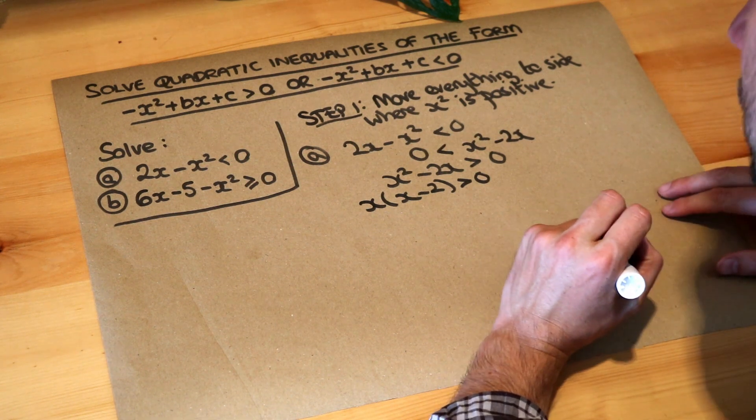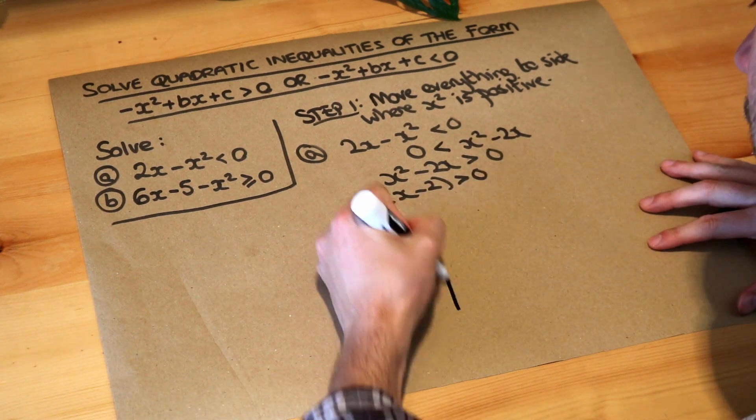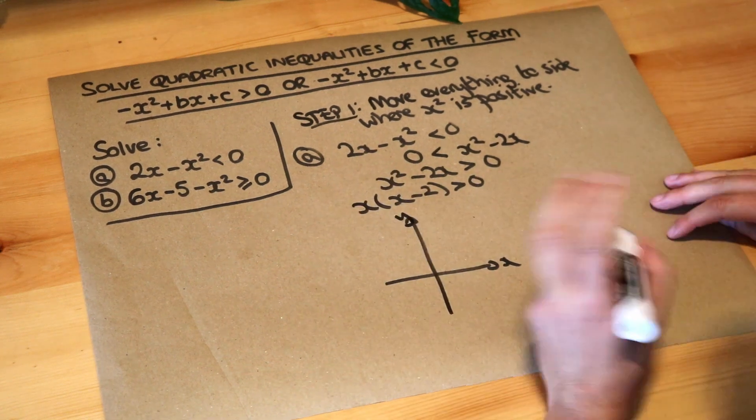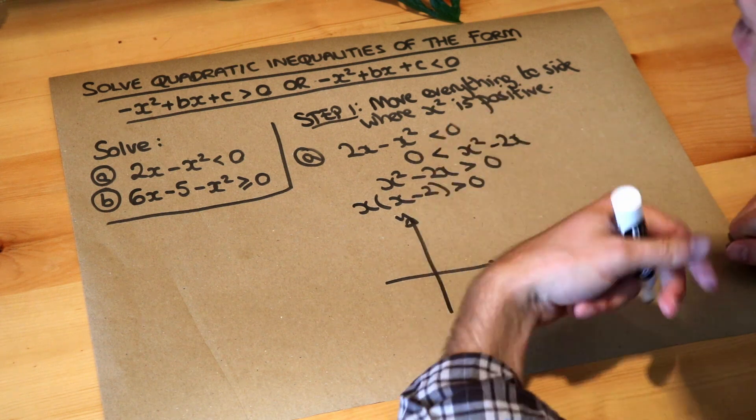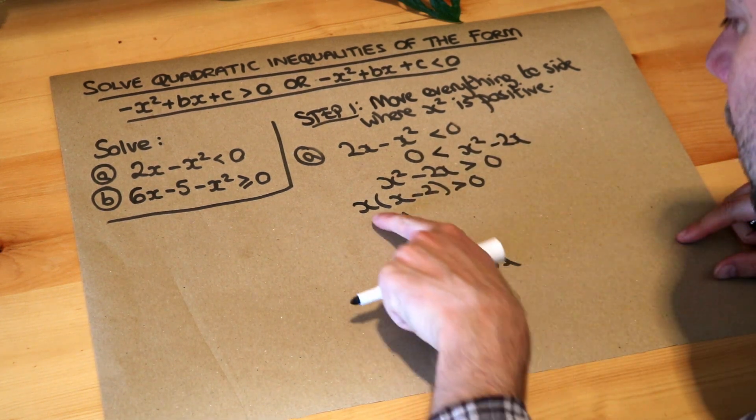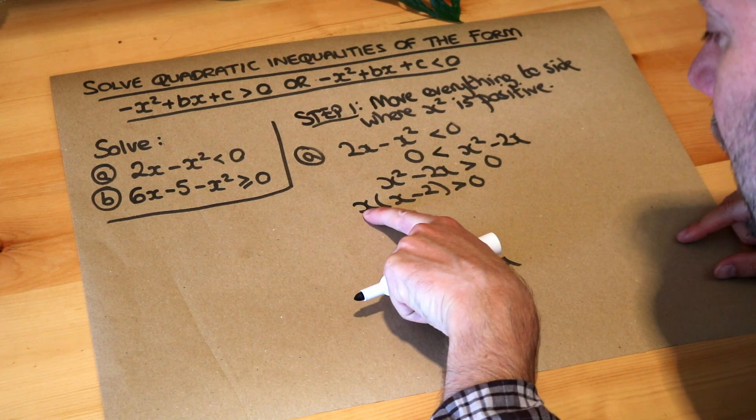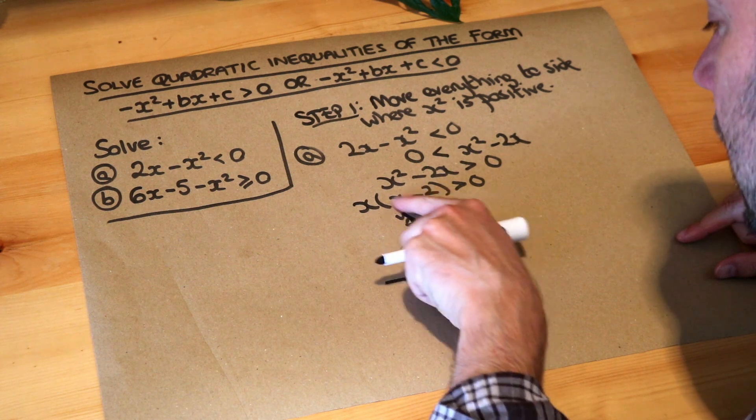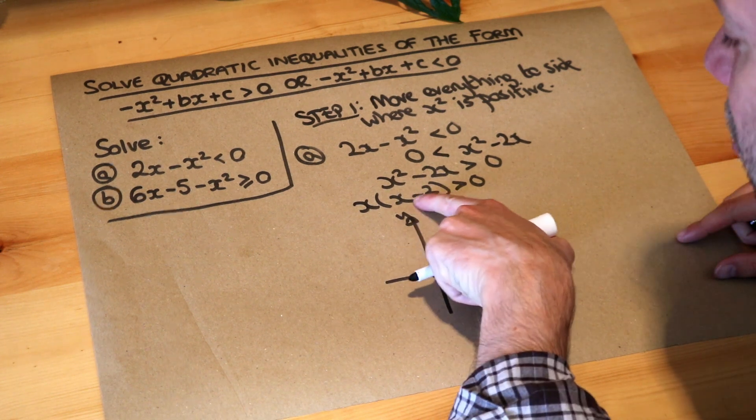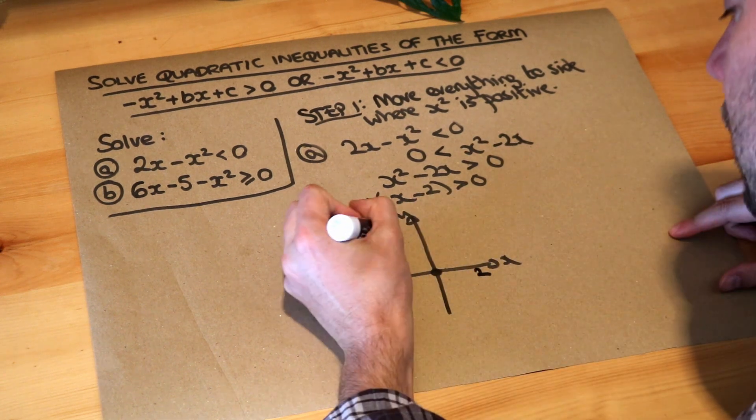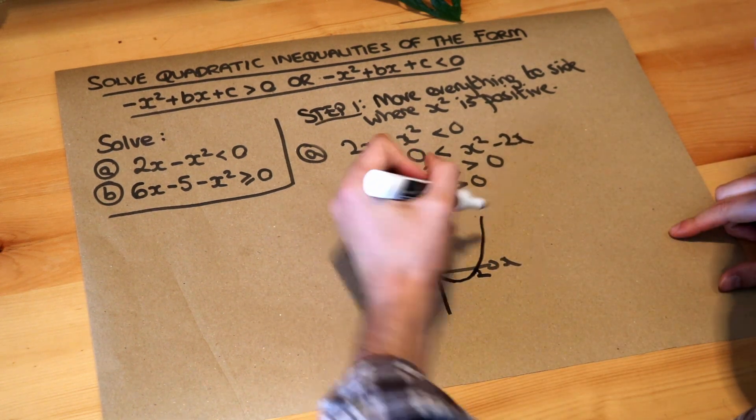And then the next step is that we would sketch it. So we sketch it, here's the x-axis, the y-axis. I'm just going to do this very quickly because we've done this many times before. But we find the x-intercepts. Now this one gives us an x-intercept of zero and this factor here gives us an x-intercept of two. Remember we just negate that number so the minus two becomes positive two and then it's going to be a smiley face shape.